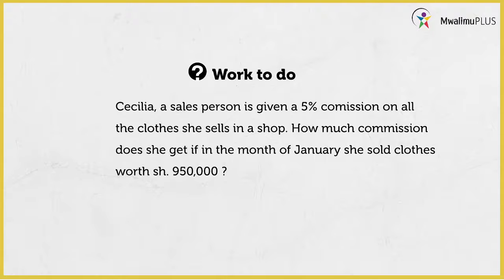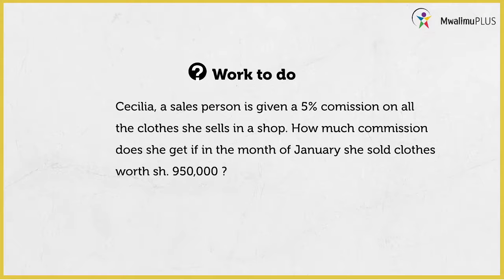This is what you are expected to do. There are diagrams showing us this girl called Cecilia trying to make a sale. To make a sale is to exchange the services — I give you the clothes, you give me the money. The commission that she was offered was 5%, and the total sales that she made from all the clothes was 950,000 shillings. That is where we start.